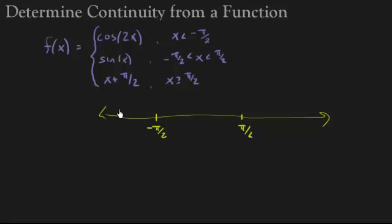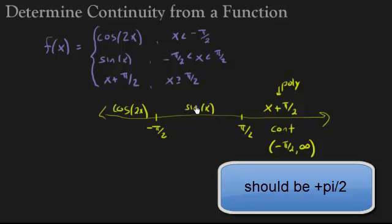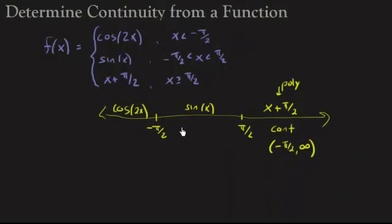Now in this region, this is where I have cosine of 2x. In this region, this is where I have sine of x. And this one I have x plus π/2. Now that's a polynomial, so that means this is continuous from negative π/2 to infinity. Sine of x is continuous on its domain, and that domain right now is negative π/2 to π/2, so it's continuous on this region.